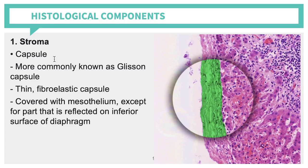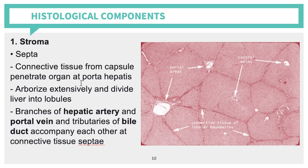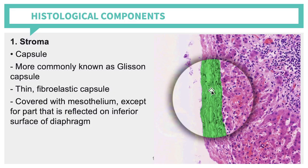Your capsule is more commonly known as Glisson's capsule. It is a thin fibroelastic capsule covered with mesothelium, except for parts reflected on the inferior surface of your diaphragm. Your septa, on the other hand, is connective tissue from the capsule which penetrates to the porta hepatis, arborizes extensively, and divides the liver into lobules.